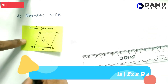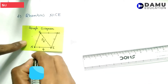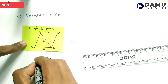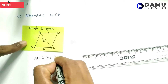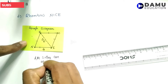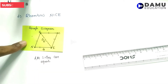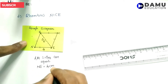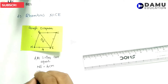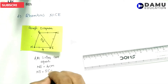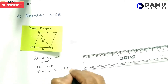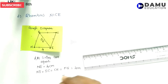A rhombus means all sides are equal. So all sides are equal. Rhombus side will be equal to 4 centimetres, that means NI will be equal to IC, IC will be equal to CE, that will be equal to EN. So all of those will be equal to 4 centimetres.